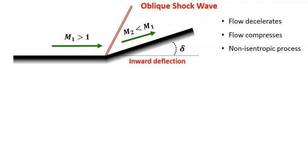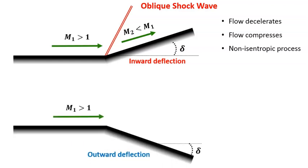But what if, instead of an inward deflection, we have a surface that is deflected away from the flow, an outward deflection.